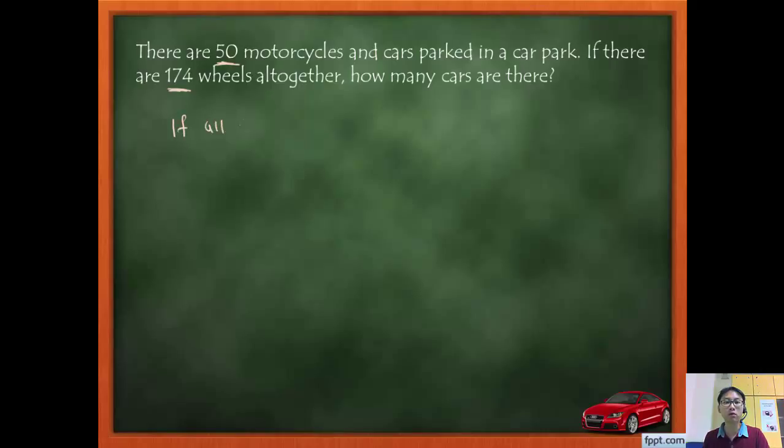If all vehicles are, again, what do I suppose? I can either choose motorcycles or cars. So usually we choose a smaller amount. So if all vehicles are motorcycles, alright, how many wheels will I have? So I have fifty motorcycles times two, and that will give me one hundred wheels. But I'm supposed to have 174 wheels, so I have an extra 174 minus 100, and that will give me 74.